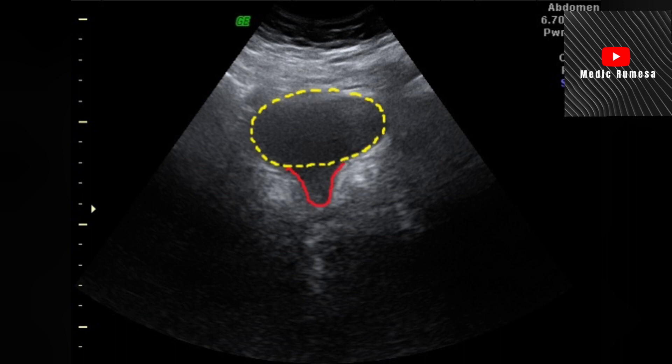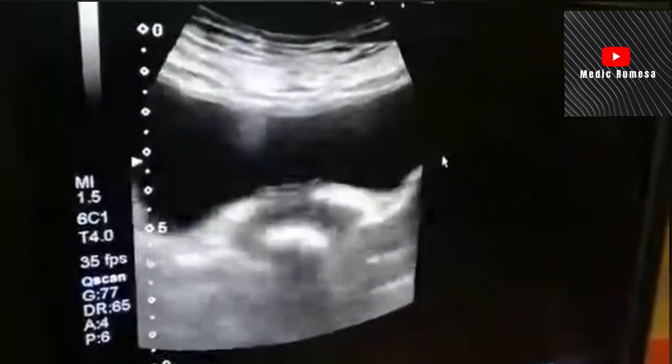Another important finding to note here is the increased AP diameter of the bladder. The yellow line shows the normal shape of the bladder and the red line shows herniation of the bladder neck, which can be the cause of urinary symptoms.